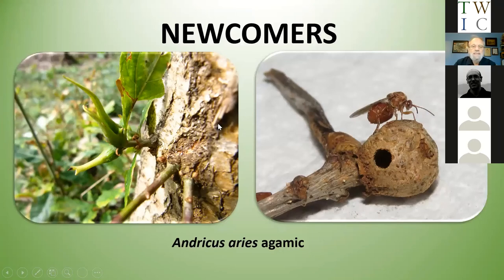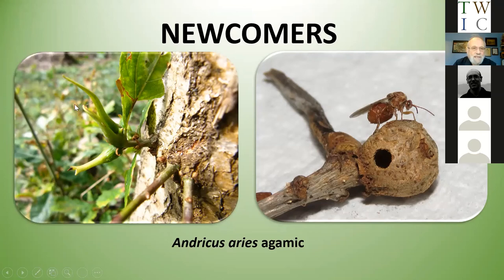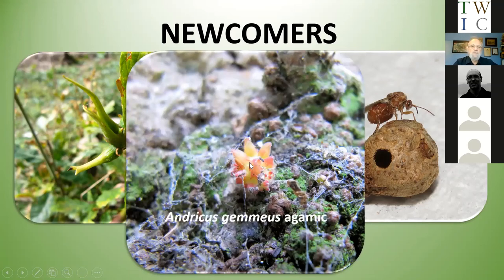A few more newcomers: Andricus aries — you've probably got this in Scotland — arrived in Britain in 1997 when found in Berkshire, at a place where gall wasps were being studied. It has strap-like projections unlike anything else. You can identify what's emerged from a gall by the size of the holes: a large hole means the gall causer has emerged; lots of little pinholes mean the parasitoids have emerged. Andricus burgundus arrived in 2008 and has certainly reached Yorkshire and Northumberland — it's quite obscure and difficult to see.